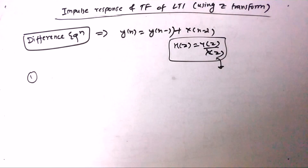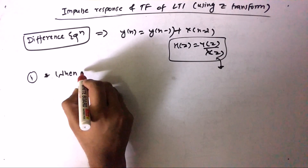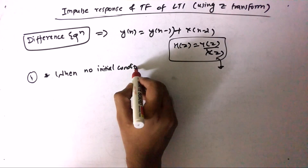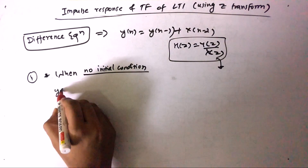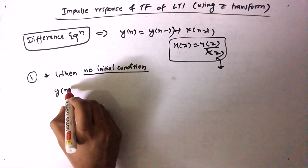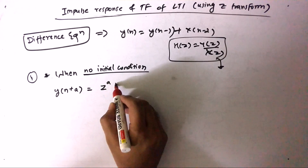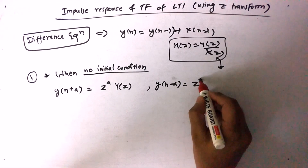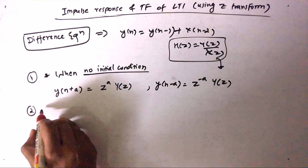The first formula is when there is no initial condition. It is very simple. If we have Y(N+A), converting to Z-transform gives Z raised to A times Y(Z). Similarly, if we have Y(N−A), it becomes Z raised to minus A times Y(Z).